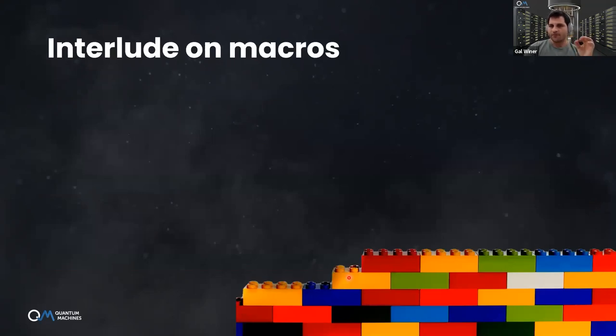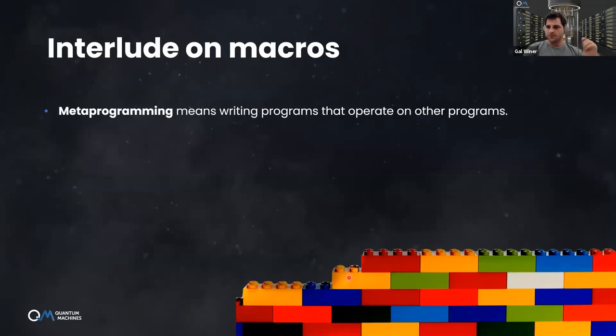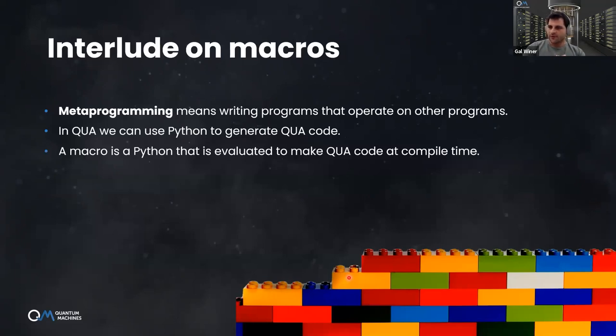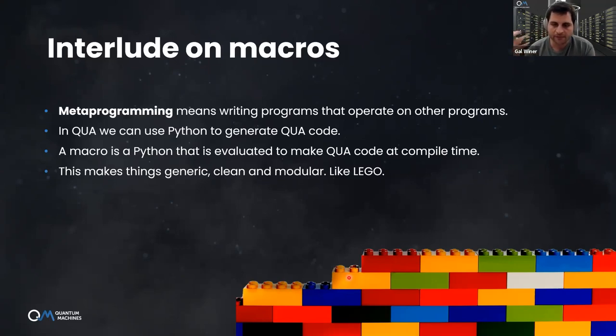Note I said macro, not a function, and I want to take a moment and explain this, even though it was explained before as well. Macros are an example of metaprogramming. This is a technique that has various features, but here it means you use one programming language to generate another. Use Python to write QUA. The QUA compiler evaluates the macros at compile time. So they're effectively replaced by QUA code before things are sent to hardware.